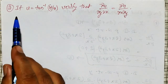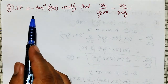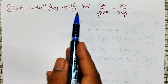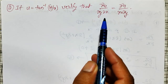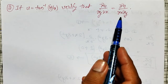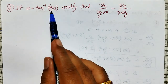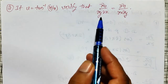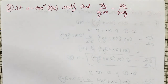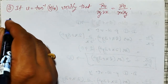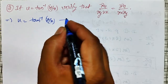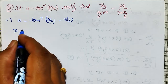In this video I am going to partially differentiate u = tan⁻¹(y/x) to verify that ∂²u/∂y∂x is equal to ∂²u/∂x∂y. First of all, I have to differentiate partially with respect to x and then with respect to y, and then differentiate again with respect to x and y step by step. Let me call u = tan⁻¹(y/x) as equation number one.